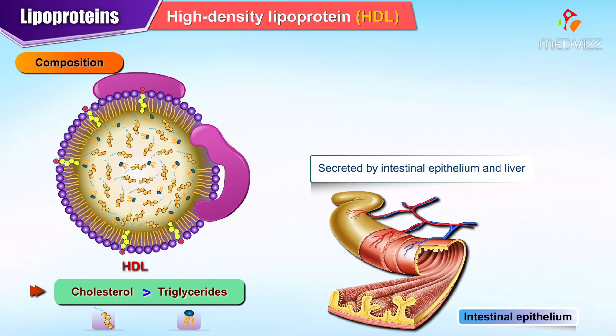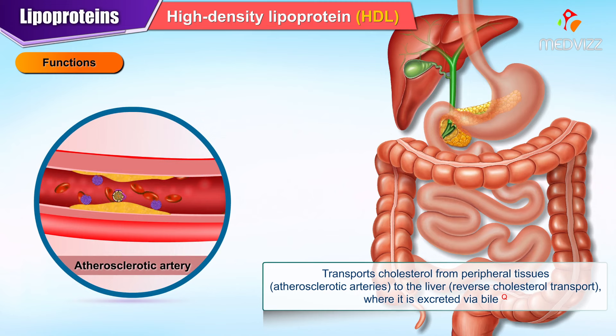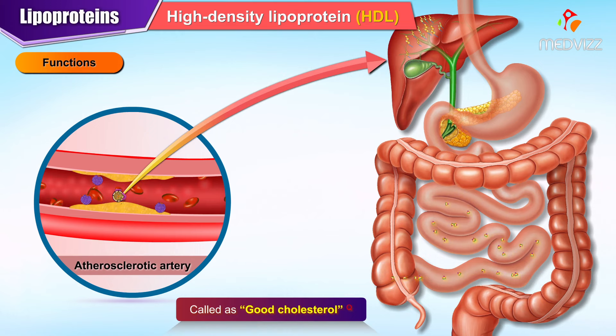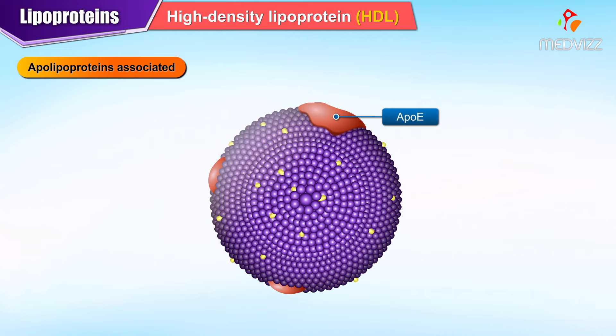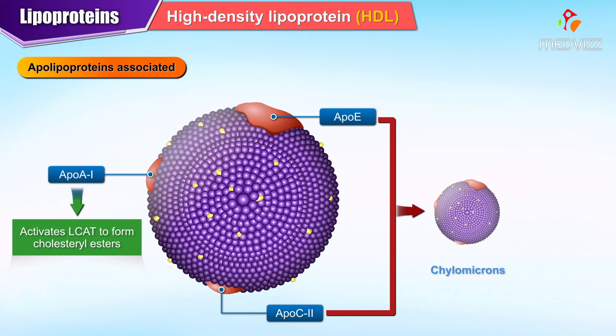High density lipoprotein, HDL, is mainly composed of cholesterol more than triglycerides. It is secreted by intestinal epithelium and liver. It transports cholesterol from peripheral tissues such as atherosclerotic arteries to the liver by reverse cholesterol transport, where it is excreted via bile — hence called good cholesterol. The higher the concentration, the lower the risk for coronary artery disease. Apolipoproteins associated are ApoE, A1 and C2. ApoA1 activates L-CAT to form cholesterol esters and transfers ApoC2 and ApoE to nascent chylomicrons and VLDL.